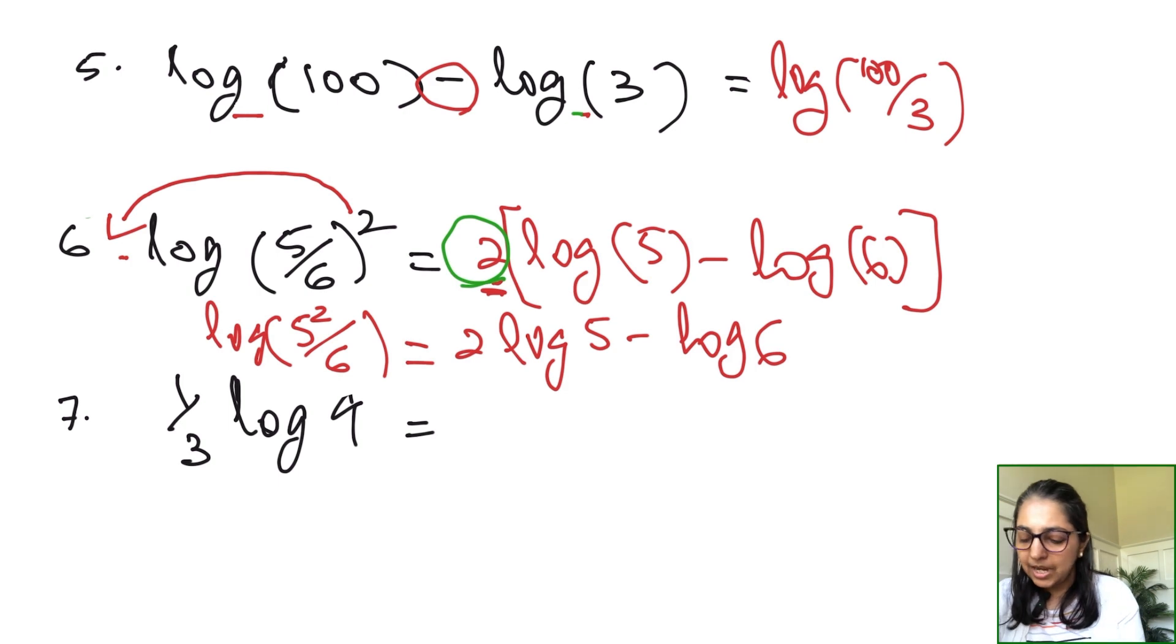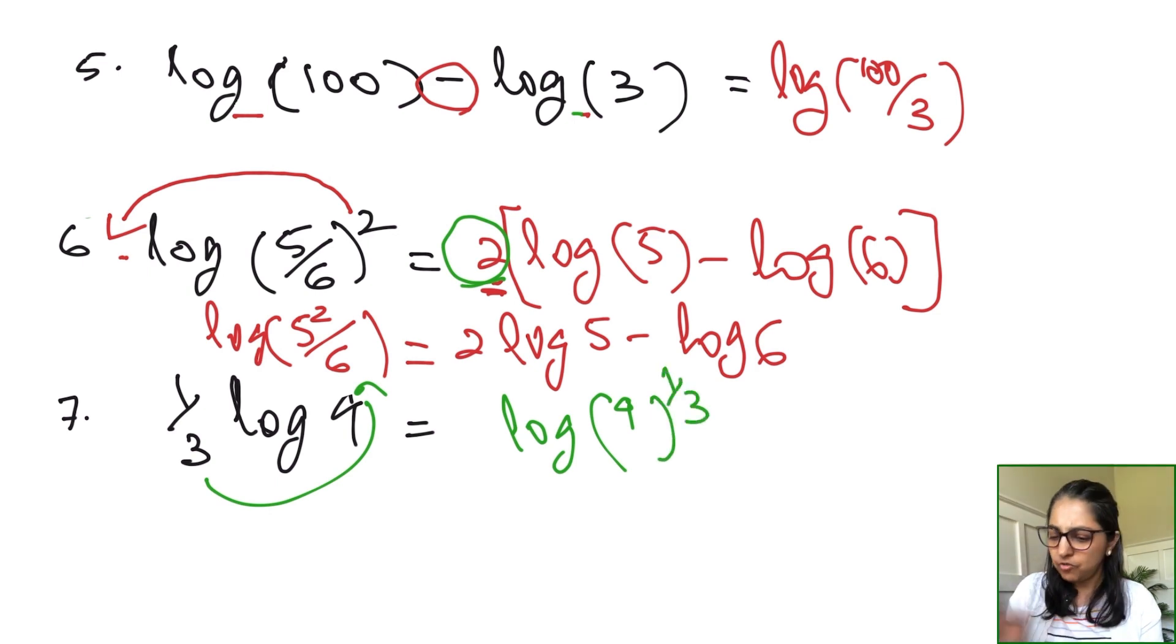Next example, what we have is one-third log 9. Again, this is power rule, a direct application of the property. All you have to do is take the power right here and rewrite the log as log(9^(1/3)). That's pretty much a straightforward application of all these logarithmic properties.